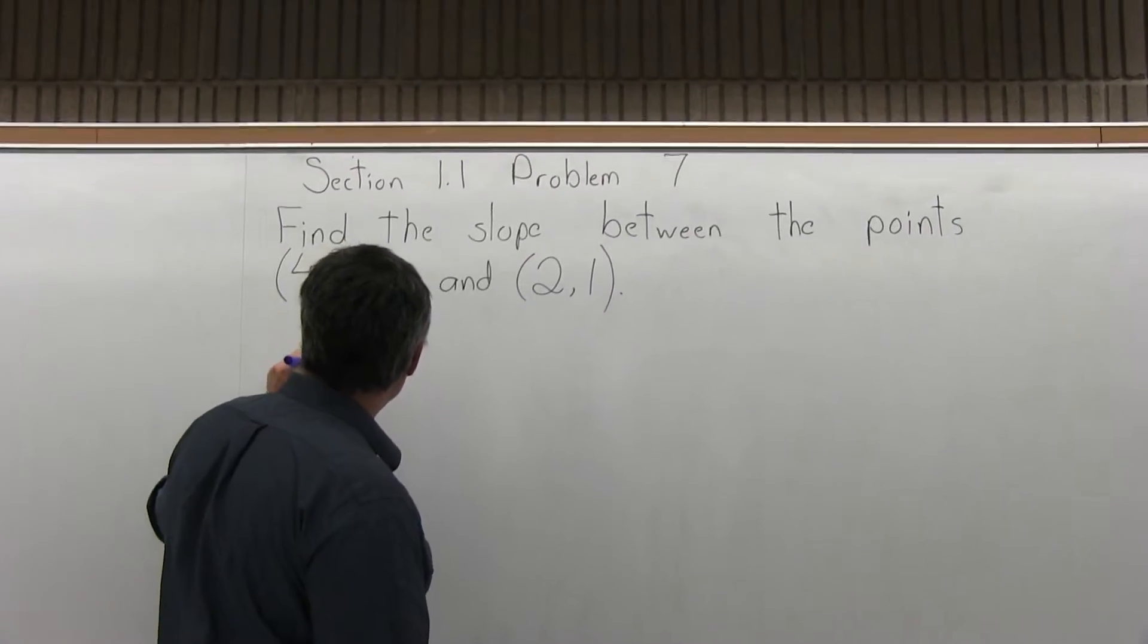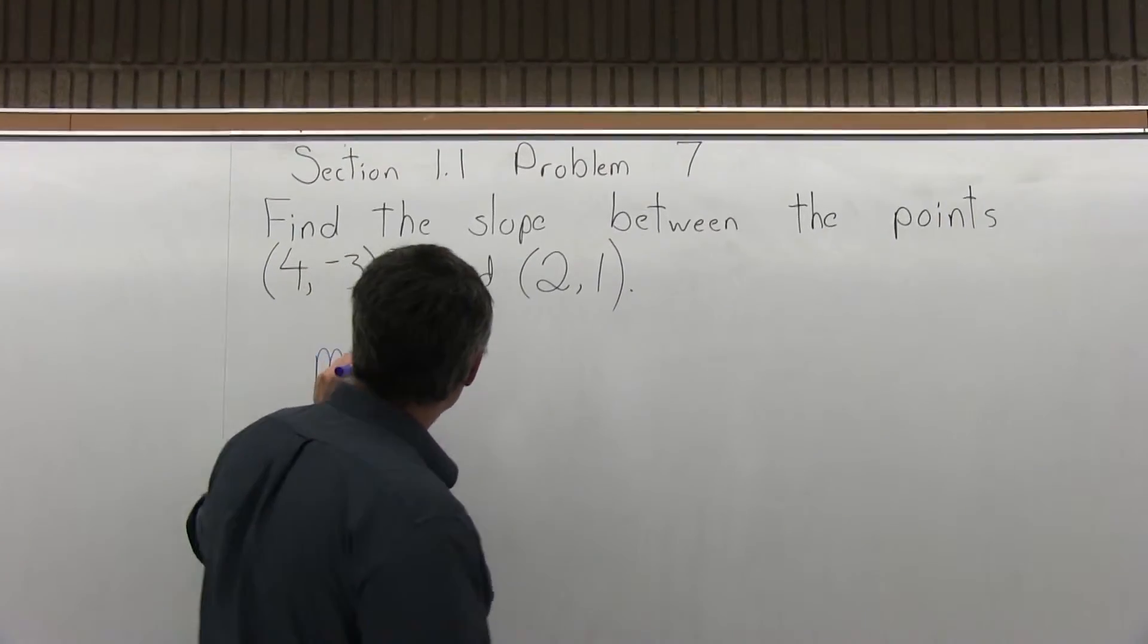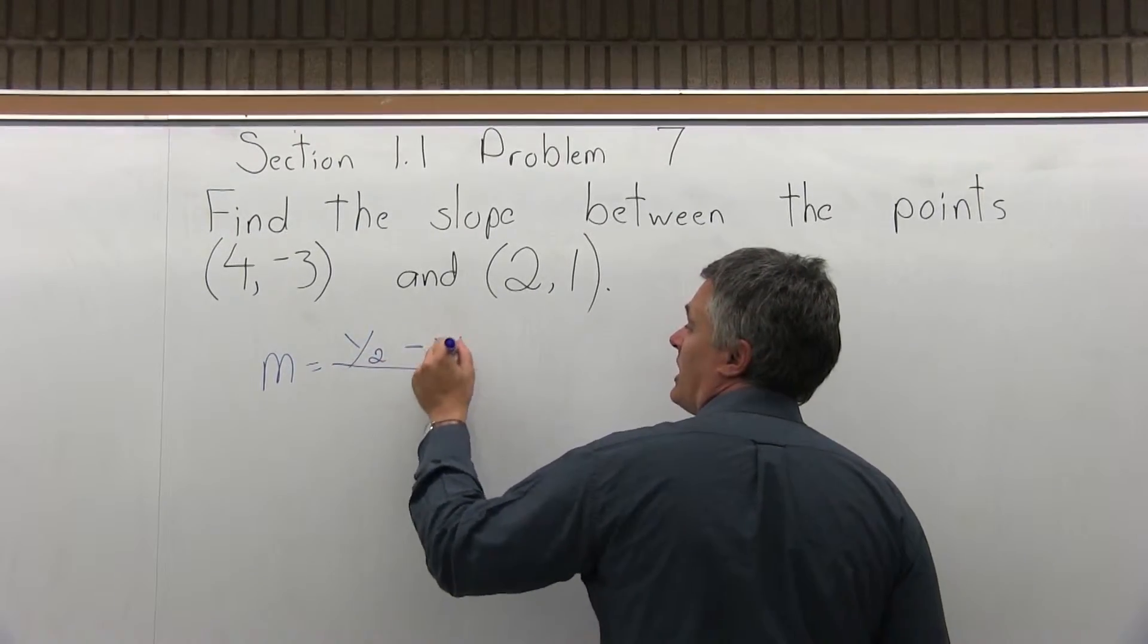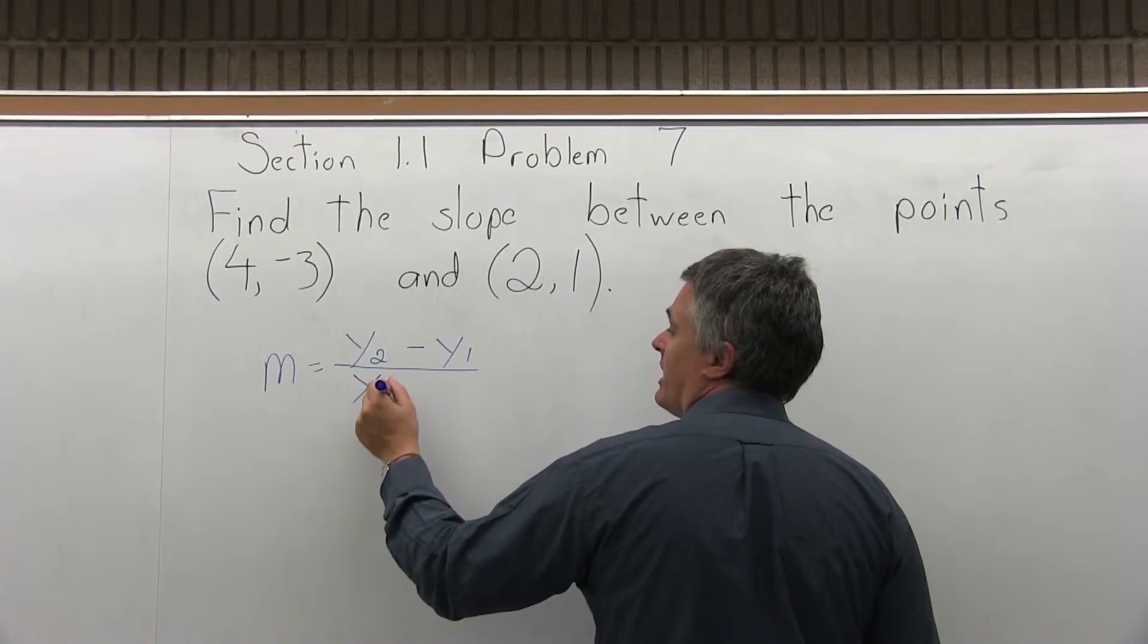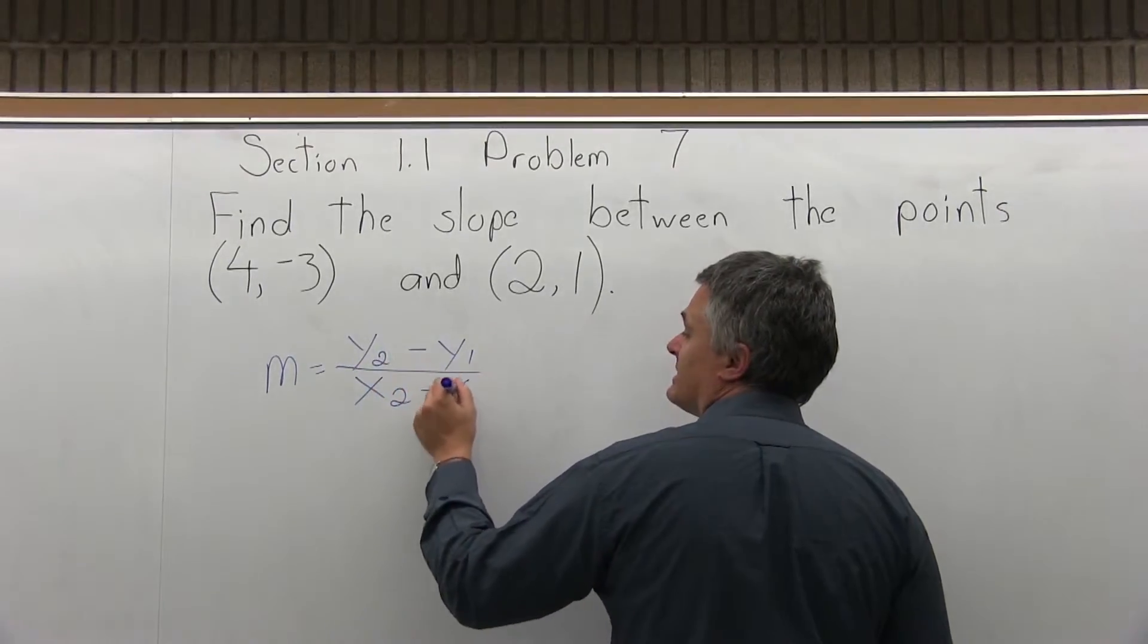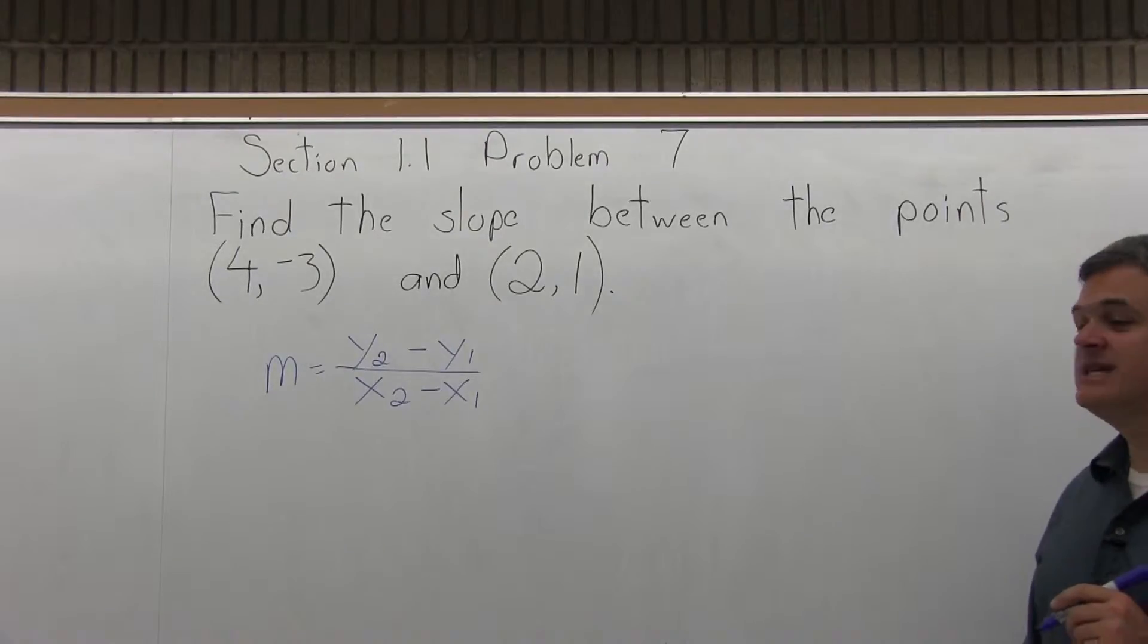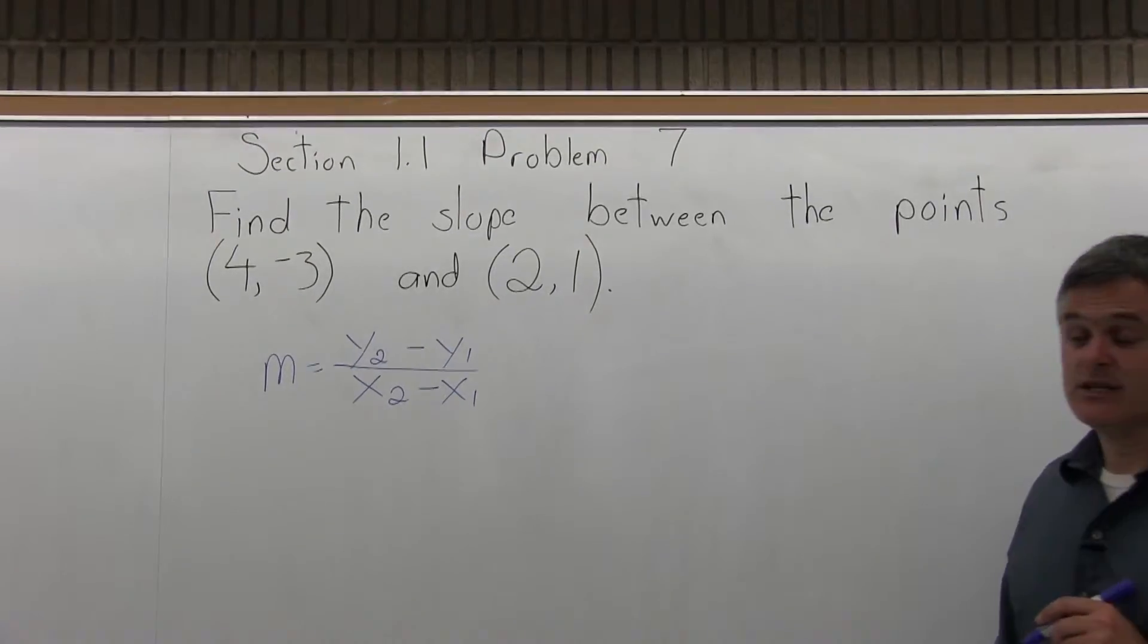To find the slope, we use the formula for slope, which is m equals y2 minus y1 over x2 minus x1. And again, with the little subscripts, it makes the formula seem more complicated than it really is.